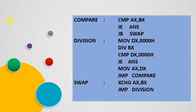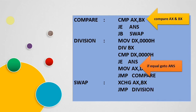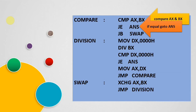This is the comparison operation: we compare AX with BX, comparing the two numbers. If they are equal, we directly go to the label ANS where we find the multiplication of the two numbers and divide with the GCD. Otherwise, if the first number is less than the second, we perform the swapping operation.